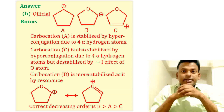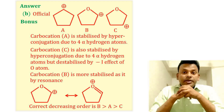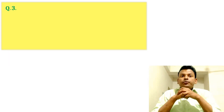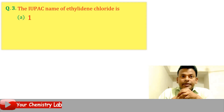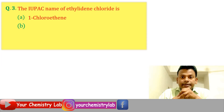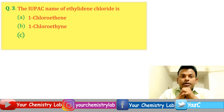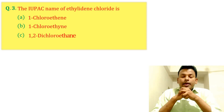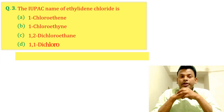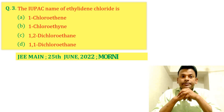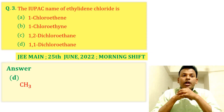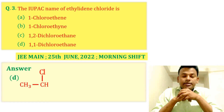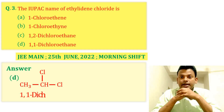Question 3: The IUPAC name of ethylidene chloride is which option? This question was set in JEE Main 25th June 2022 Morning Shift. Answer: Option D is correct — 1,1-dichloroethane is ethylidene chloride.